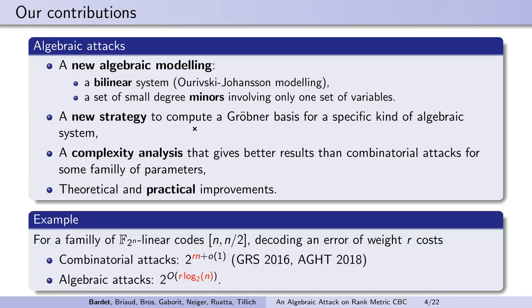For instance, consider a family of linear codes over F_2^n with length n and dimension k over F_2. Up to now, the most efficient generic decoding algorithm was the information set decoder, that is a combinatorial type of algorithm, and has a complexity in 2^(r·n), whereas our algebraic attacks have a complexity in 2^(r·log(n)).